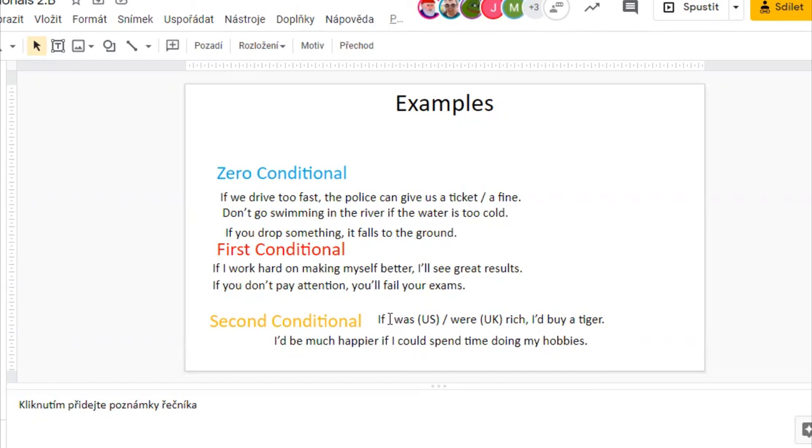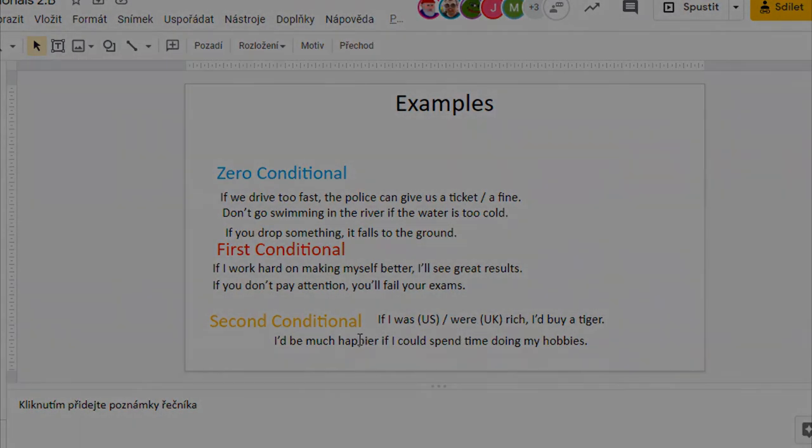But if I was American, I would use normal past simple. So that means if I was, if you were, if he she it was, if we were, if you were, if they were. So past simple is true with a little exception for the verb be in British English. The verb be has the form of were every time. Now I hope that it's easier now to understand, but they have the same meaning of course.